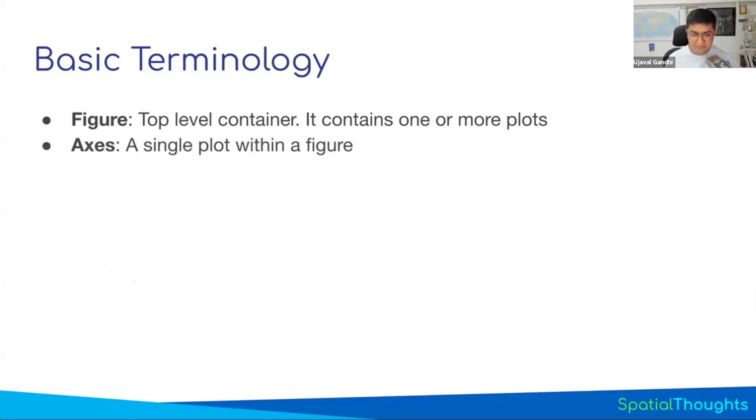Those are called axes. This is probably the biggest confusion when you start using Matplotlib: AXIS is your X and Y axis. Axes refer to the plots. So when you say I have one chart, you will say I have one figure. Inside one figure, I have one axis. If you want to change something with that plot, you'll change the axis. So axis in the context of Matplotlib is a single plot within a figure.